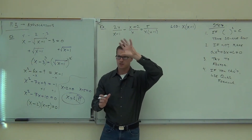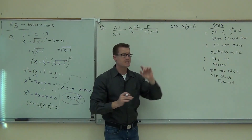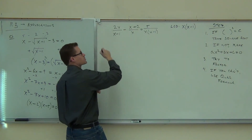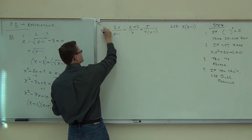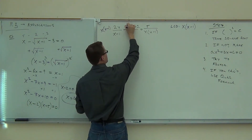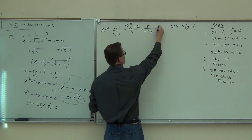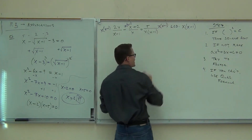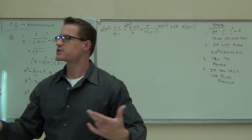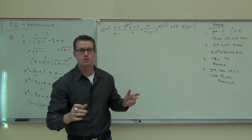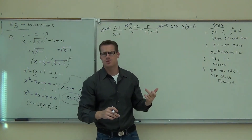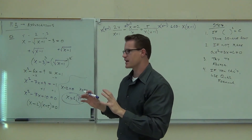We take the LCD and multiply it on every single fraction. Here, x times x minus 1. And here, x times x minus 1. And here, x times x minus 1. Because we have an equation, you can do this — it's multiplying both sides by the same expression. That's legal to do with equations. That just means multiply every single term by the same expression — in this case, the LCD, x times x minus 1.